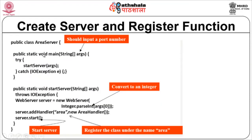We create a server class called AreaServer and from the main method we call a method called startServer, which takes the port number given in the command line. Within startServer, we instantiate an object for the WebServer — we get the port number from the command line as a string, convert it to integer using Integer.parseInt, and create the web server running on that port number. We then use the addHandler method to register the class under the name 'area', creating an instance of AreaHandler.